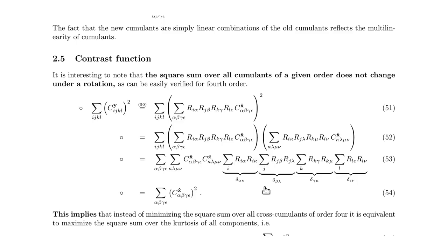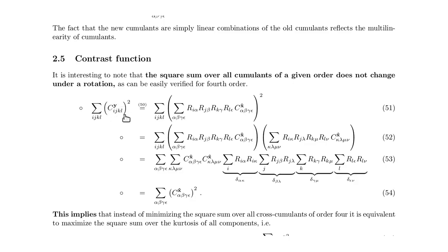If we now look at the contrast function, we find that we can do another simplification. Normally in the contrast function we sum over i, j, k, l not equal to i, i, i, i. Consider what happens if you take the sum over all cumulant components squared. If we plug in the result we derived above — one cumulant expressed from the rotation matrix and the whitened data — we get this expression here.